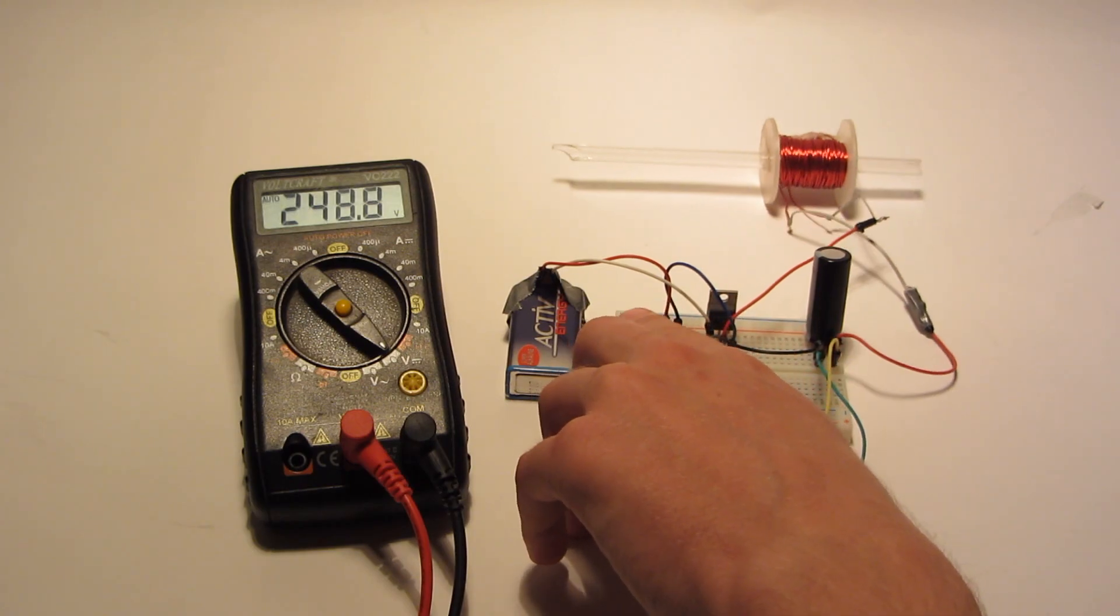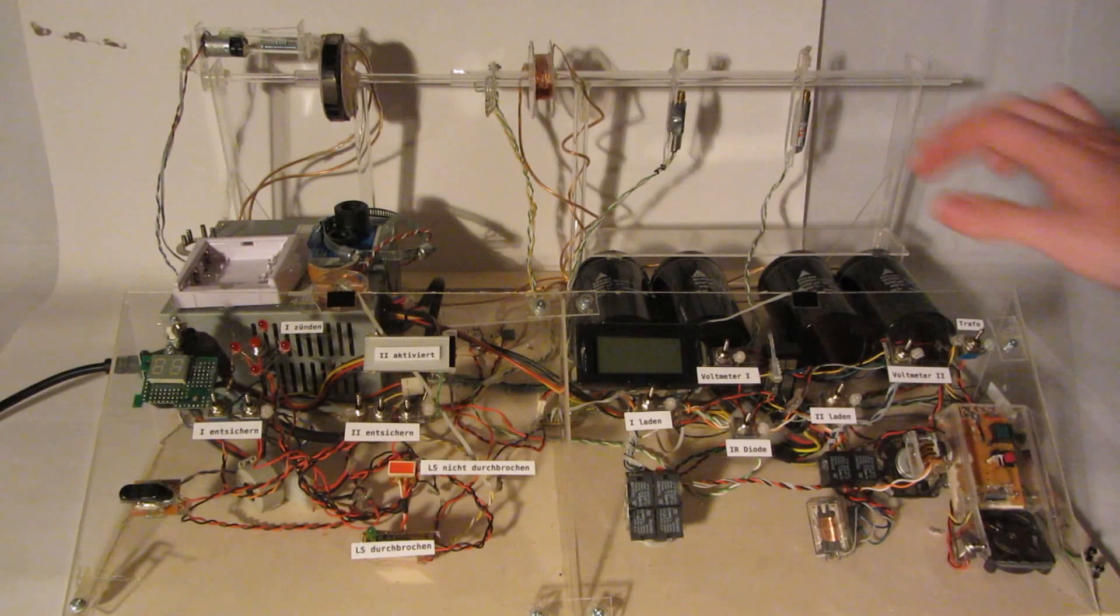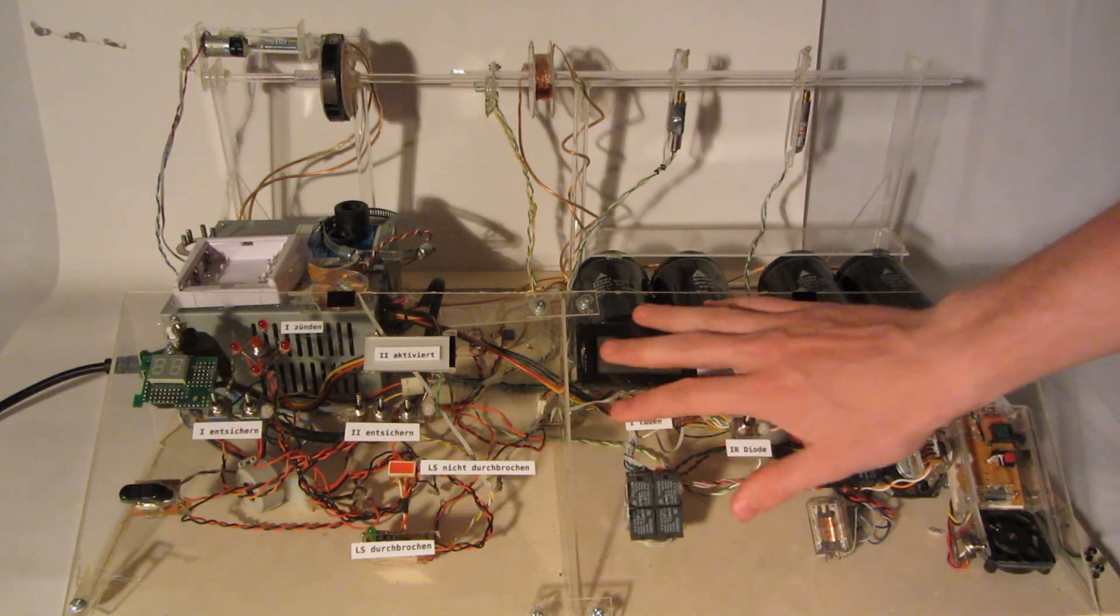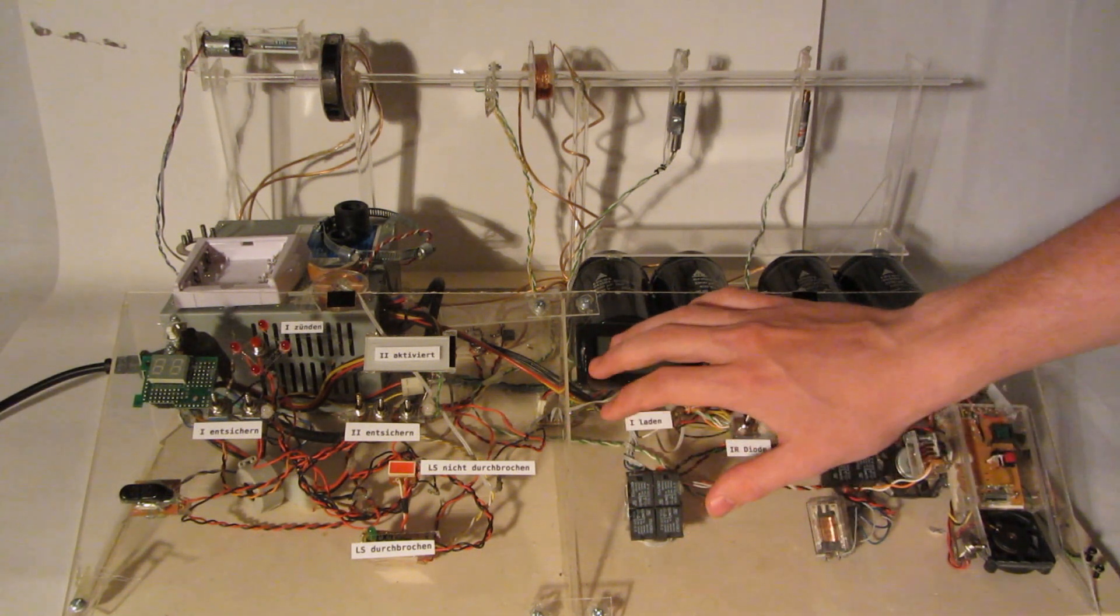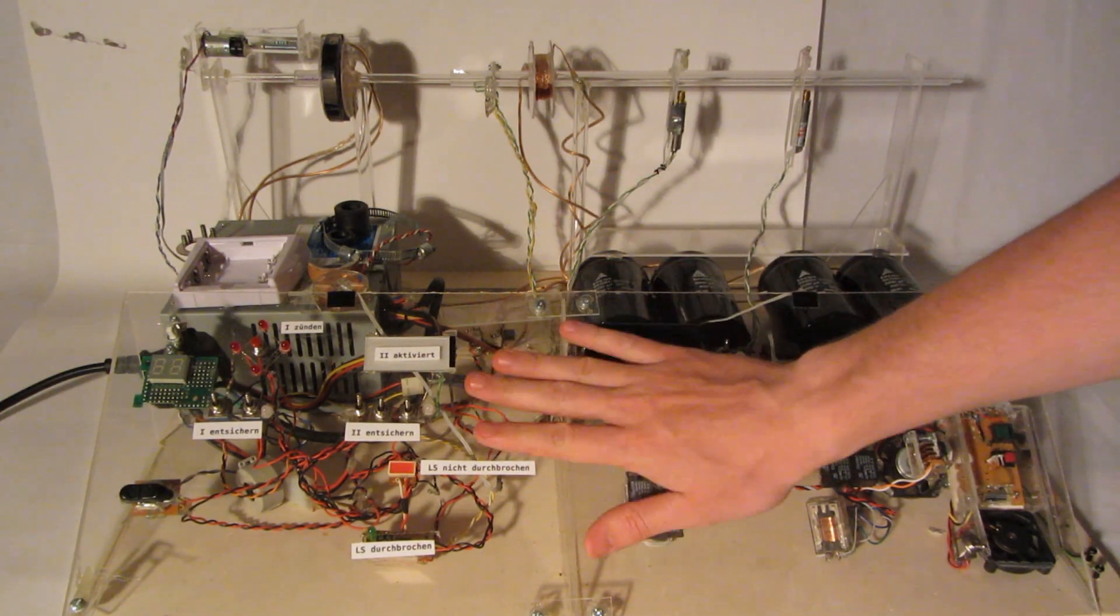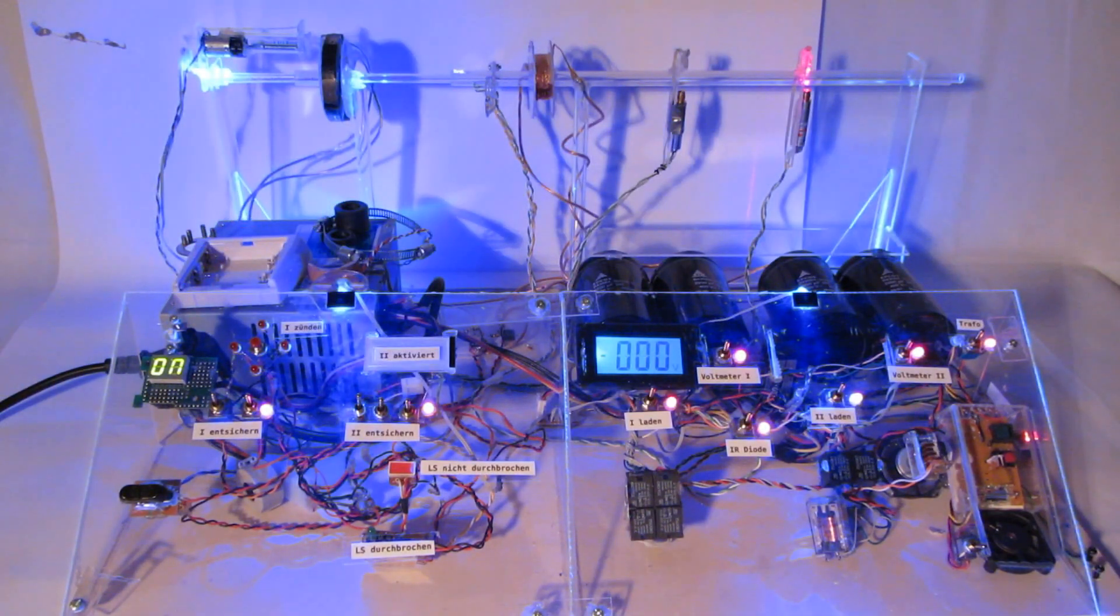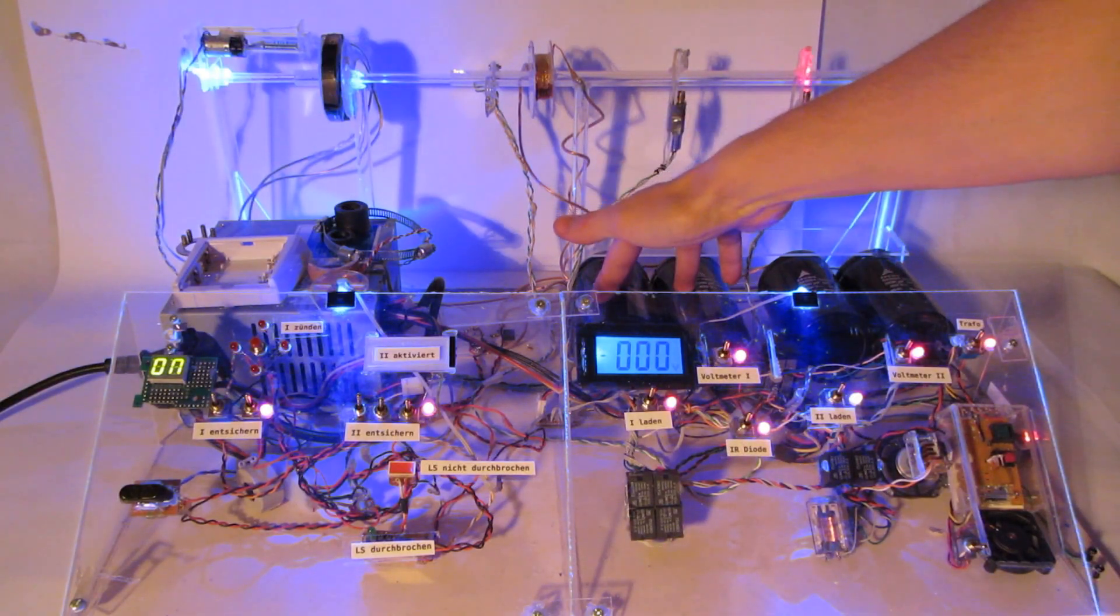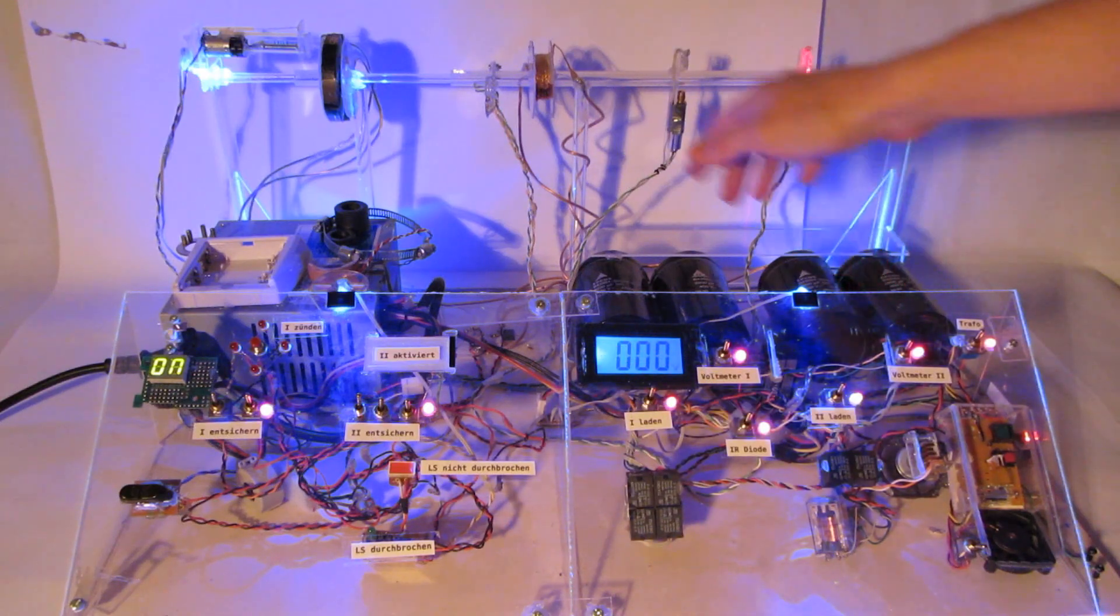This is an experimental setup for testing coils and capacities and voltages. I built this setup several years ago when I still was in school, and I would like to show you how it works. So let's turn it on. We have two stages. The first stage is activated by pushing this button, the second stage is activated by a light barrier.